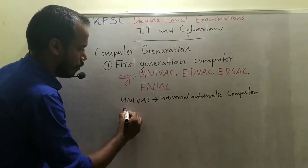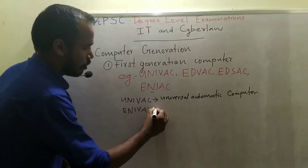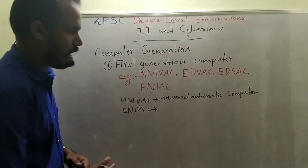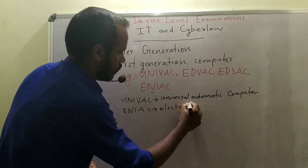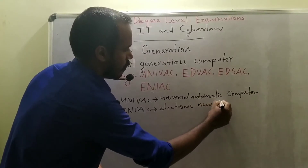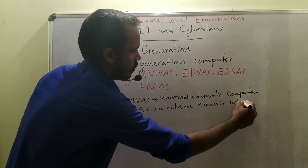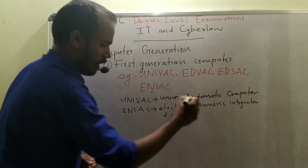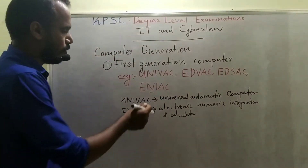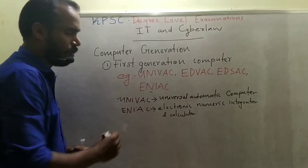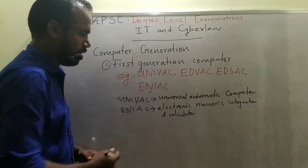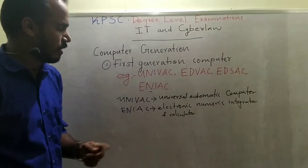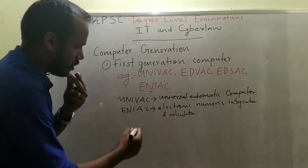UNIVAC stands for Universal Automatic Computer. ENIAC stands for Electronic Numerical Integrator and Calculator. These are important full forms for the first generation of computers.